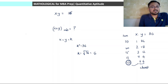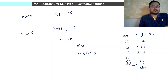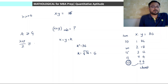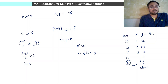Using AM-GM inequality: AM is greater than or equal to GM. Since x and y are positive, x plus y divided by 2 is greater than or equal to the geometric mean, which is square root of xy, which is square root of 36. So x plus y by 2 is greater than or equal to 6, which means x plus y is greater than or equal to 12.